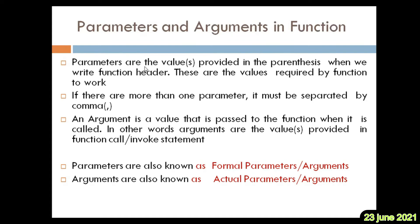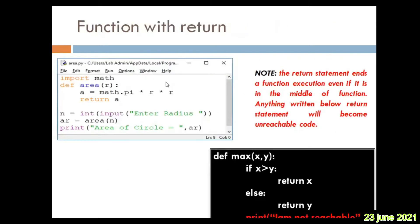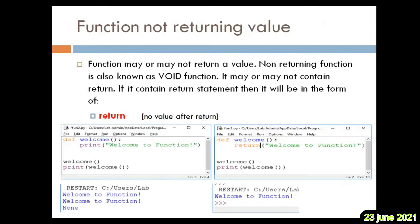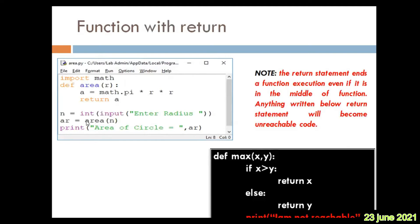The slide says: parameters are those values provided in the parentheses when we write the function header. For example, 'def area(r)' — this is a function header. These are the values required by the function to work. If a function has parameters, those are called parameters, and if there is more than one, they must be separated by a comma. An argument is a value passed to the function when it is called — that is, values provided in a function call. For example, the area function is called with 'n' — 'n' is an argument and 'r' is a parameter.